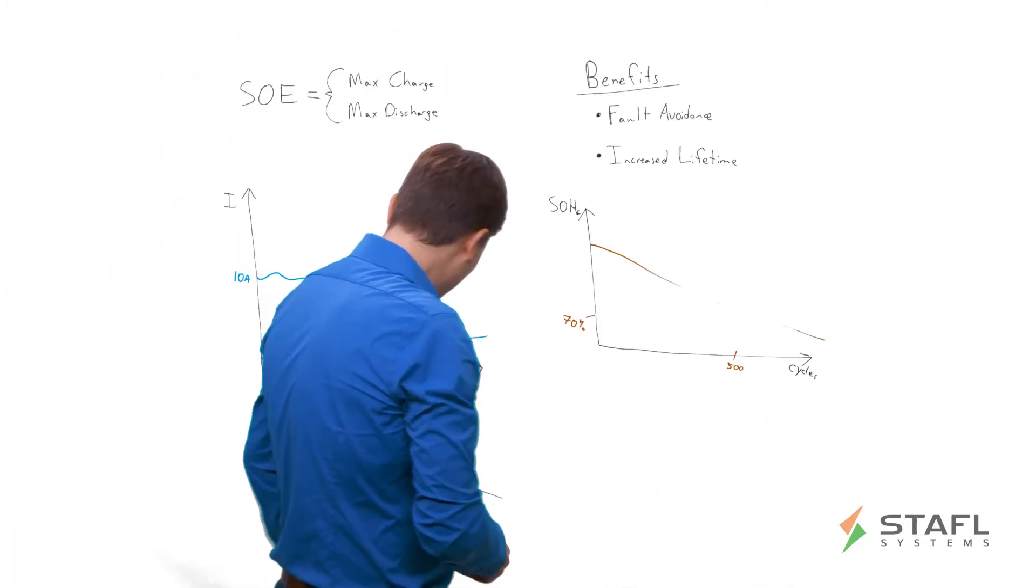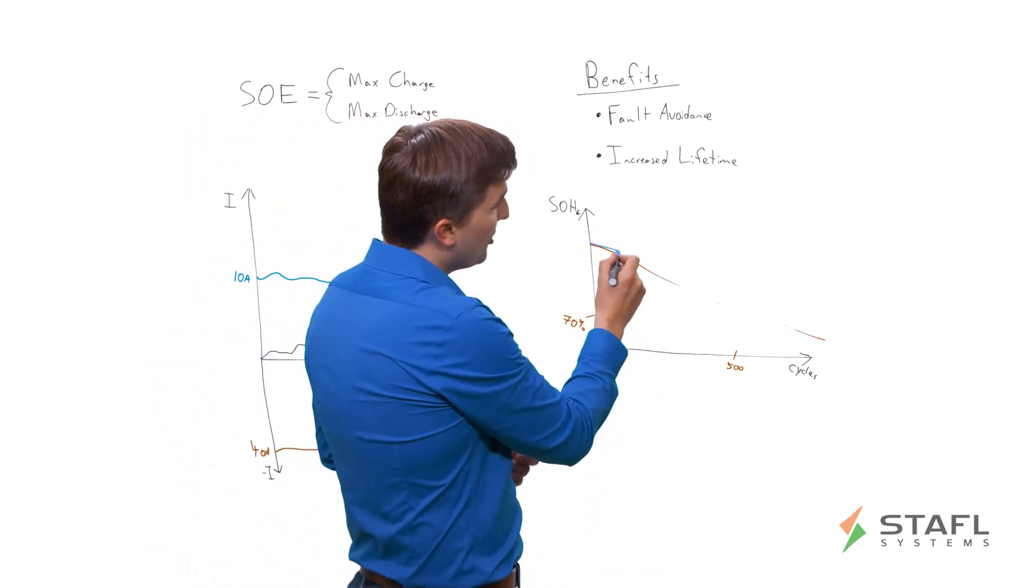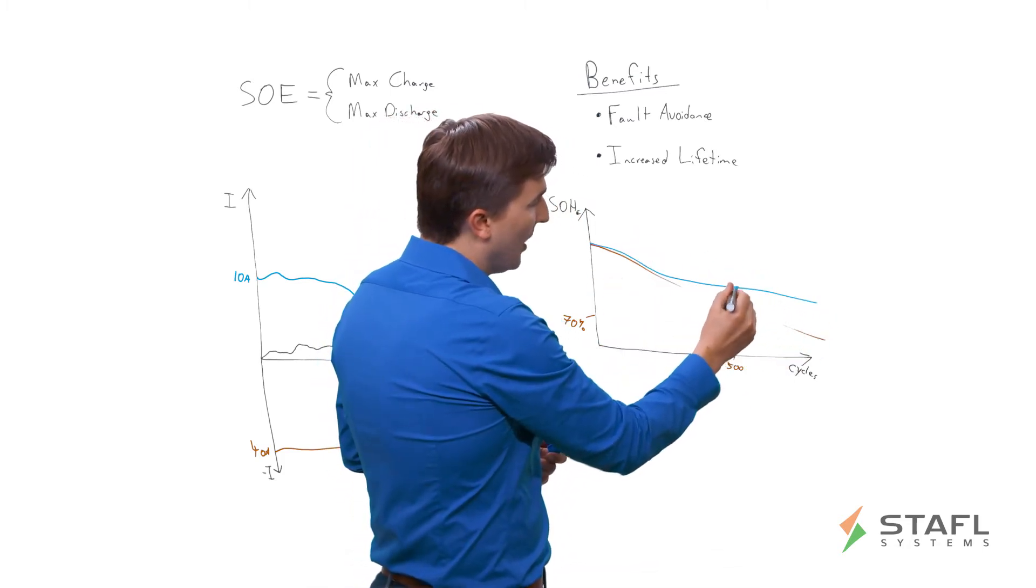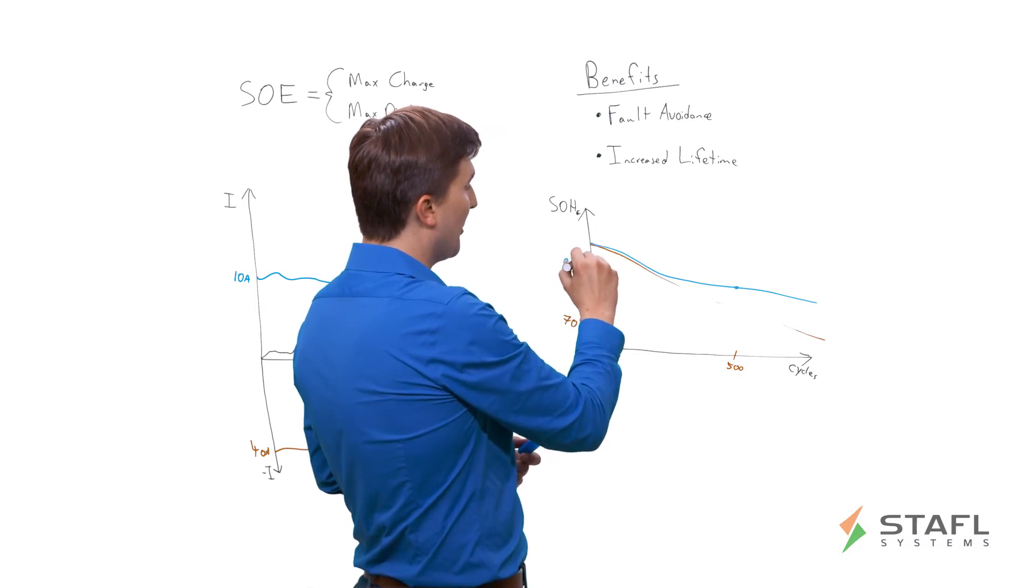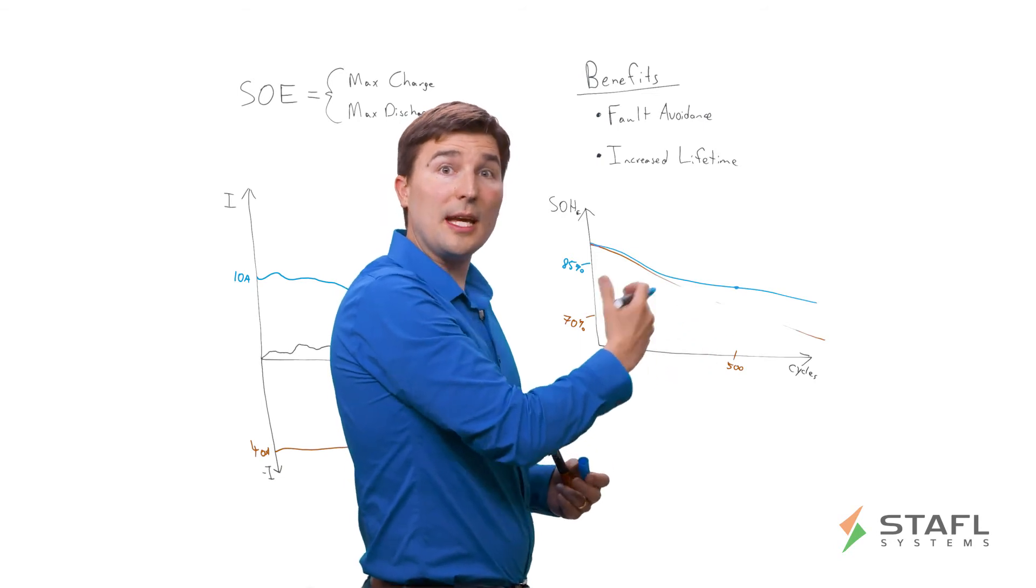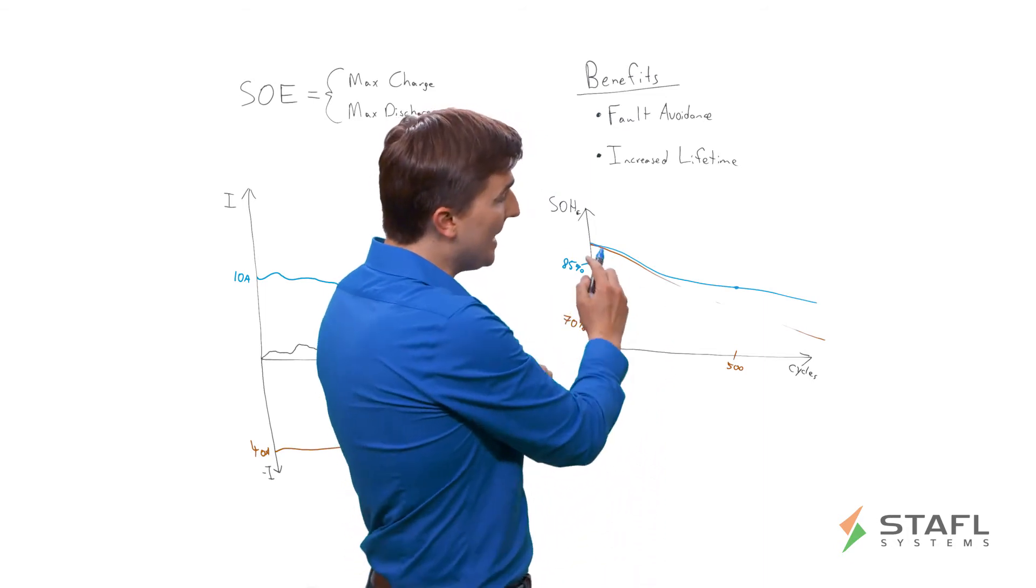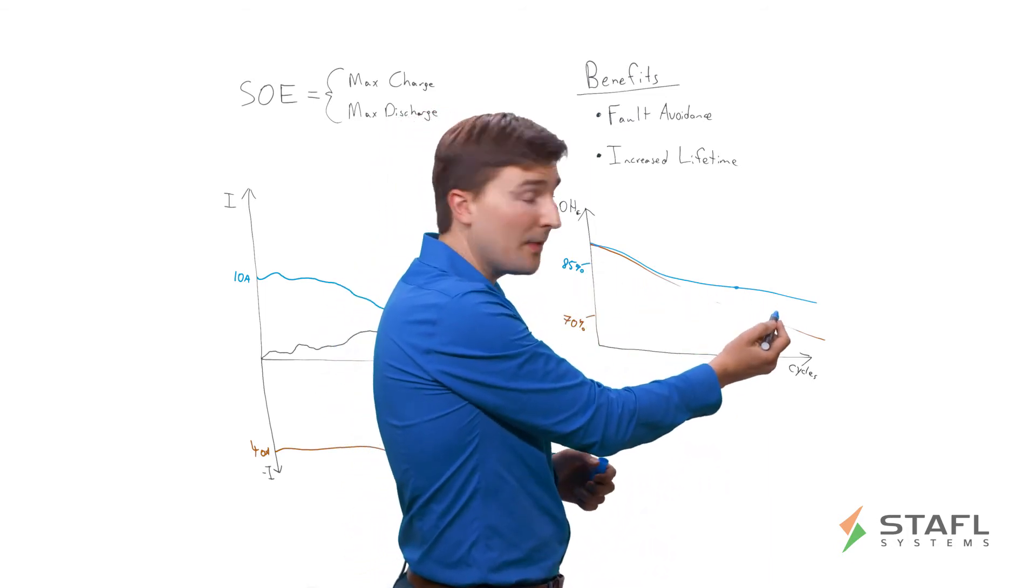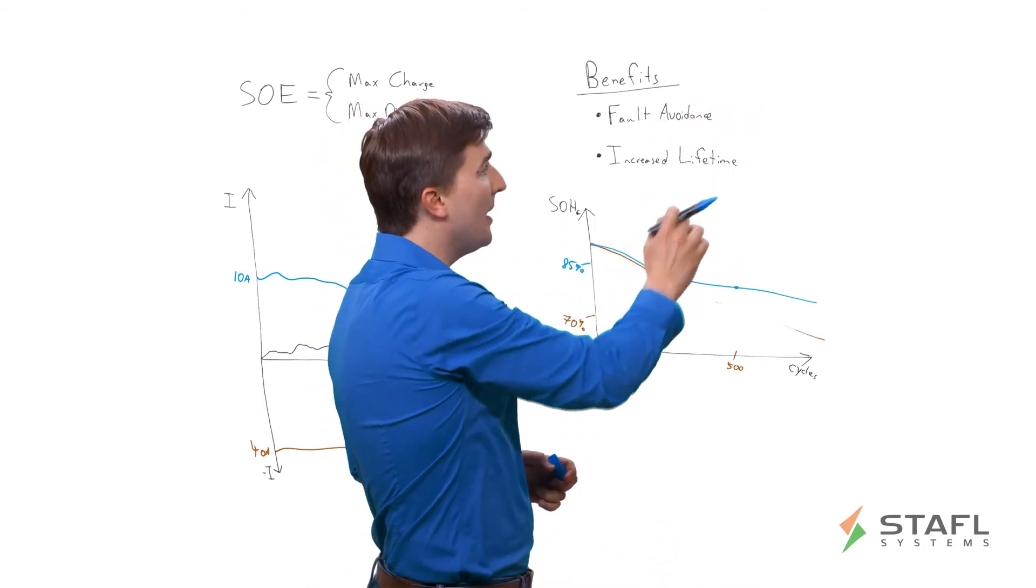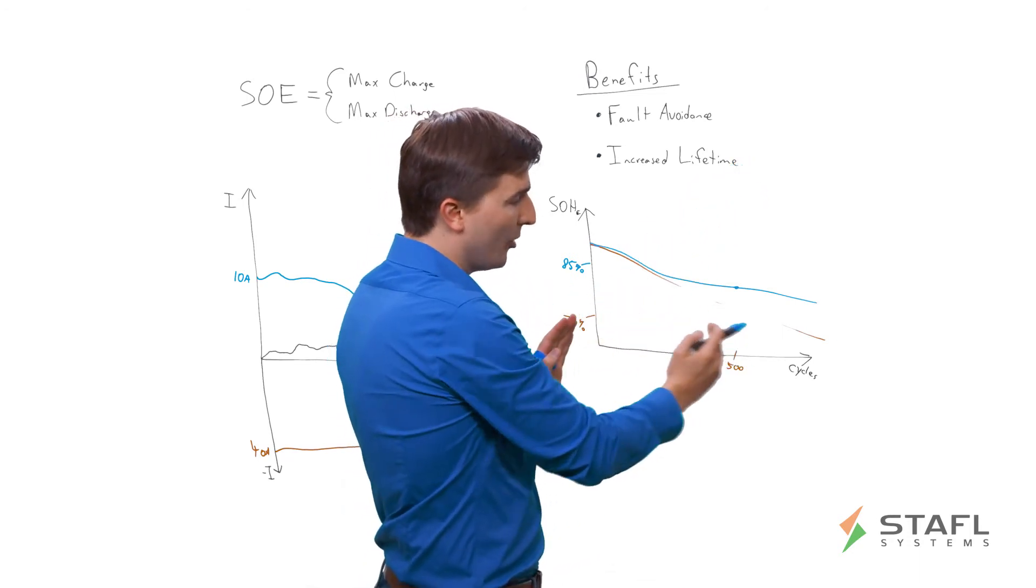Versus with the Stoffel Systems safe operating envelope, we've optimized the algorithm to stay within a certain limit so that at the same point, you would instead expect to see a higher state of health because at given critical moments of potential damage to the battery pack, the safe operating envelope technology has limited your charge or discharge current to maintain a target cycle life. And so the primary benefits are more reliable operation within the fault avoidance scheme and increased lifetime via increased state of health capacity over a given cycle life.